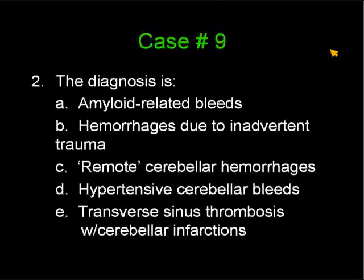The diagnosis is: A, amyloid-related bleeds; B, hemorrhages due to inadvertent trauma; C, remote cerebellar hemorrhages; D, hypertensive cerebellar bleeds; and E, transverse sinus thrombosis with cerebellar infarctions. We've got two things there that could be, but one of them fits the imaging findings quite well.